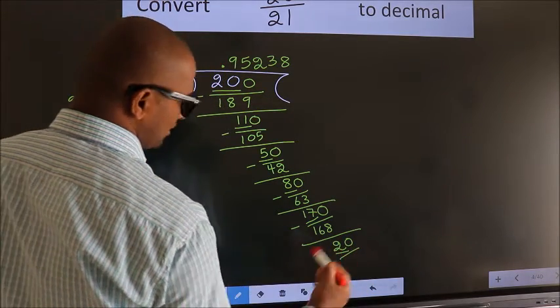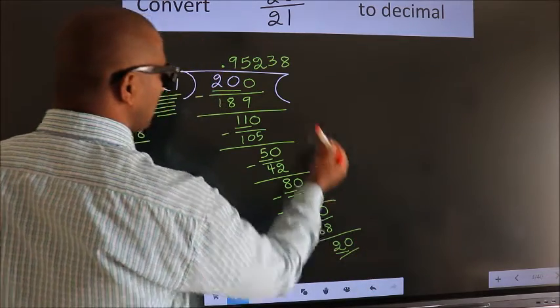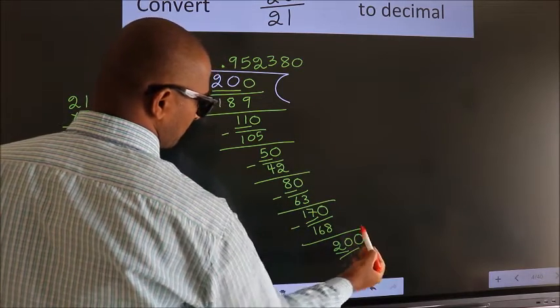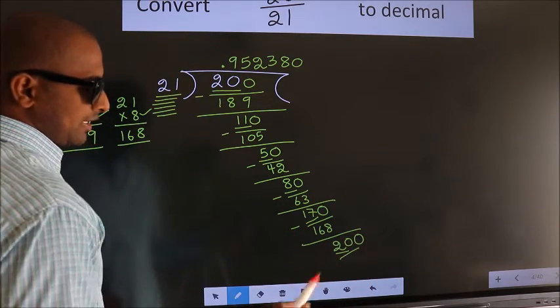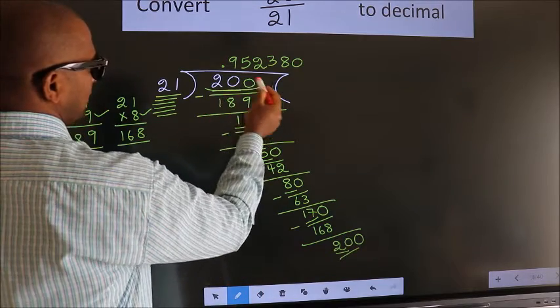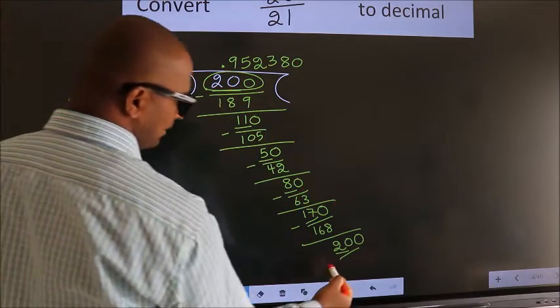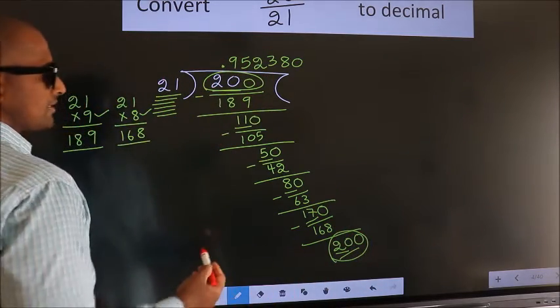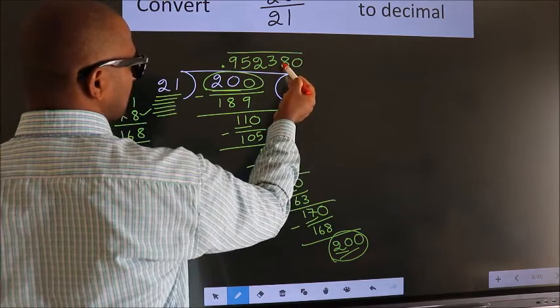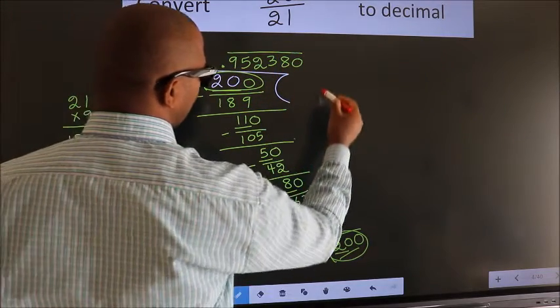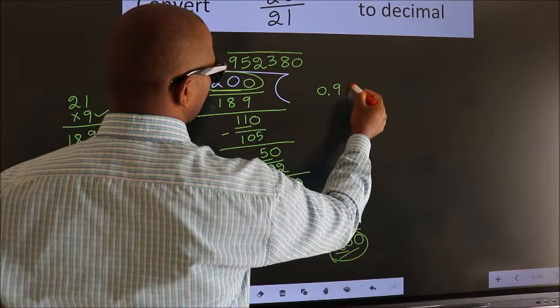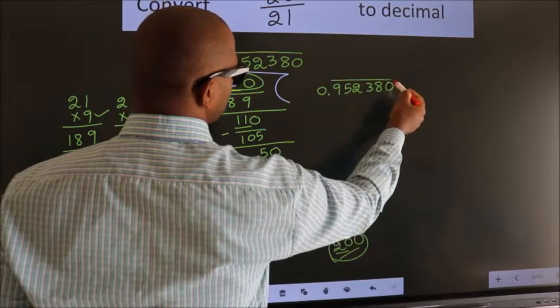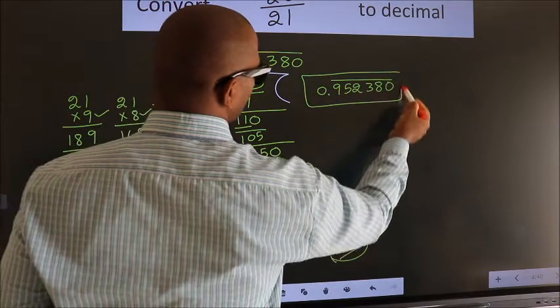So to get one more zero here we should put zero here. Now you observe, here we had 200 and we got 200 again. That means we get bar on these numbers. Therefore our answer is 0.952380 bar on these numbers. This is our answer.